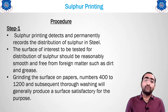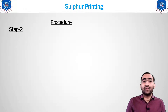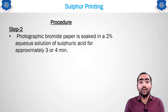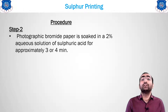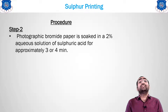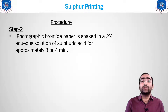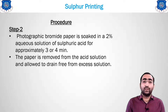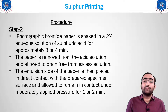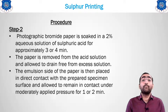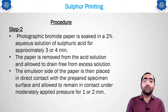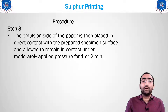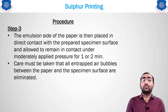In step two, take a bromide paper and soak it in a 2% aqueous solution of sulfuric acid for three to four minutes. Remove the paper from the acid and allow excess solution to drain away. The emulsion side of the paper is then placed in direct contact with the prepared specimen from step one, and pressure is applied for one to two minutes.